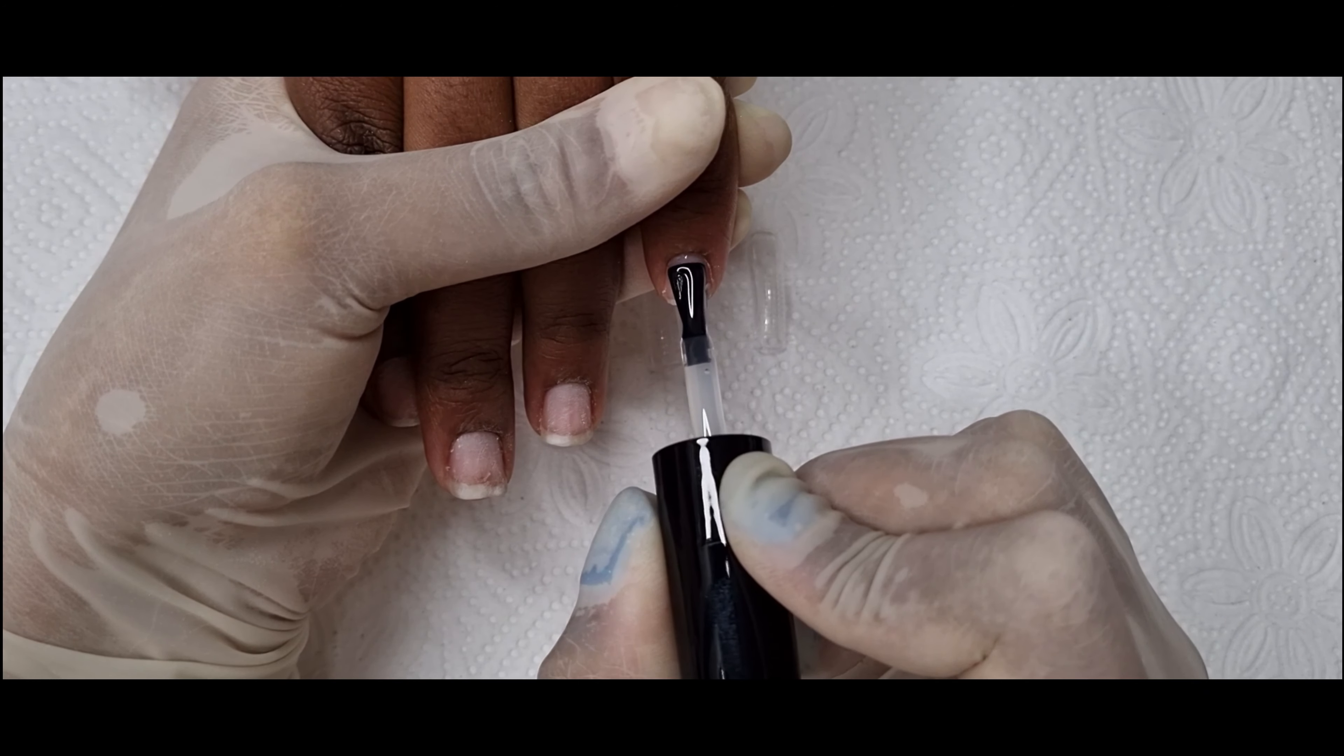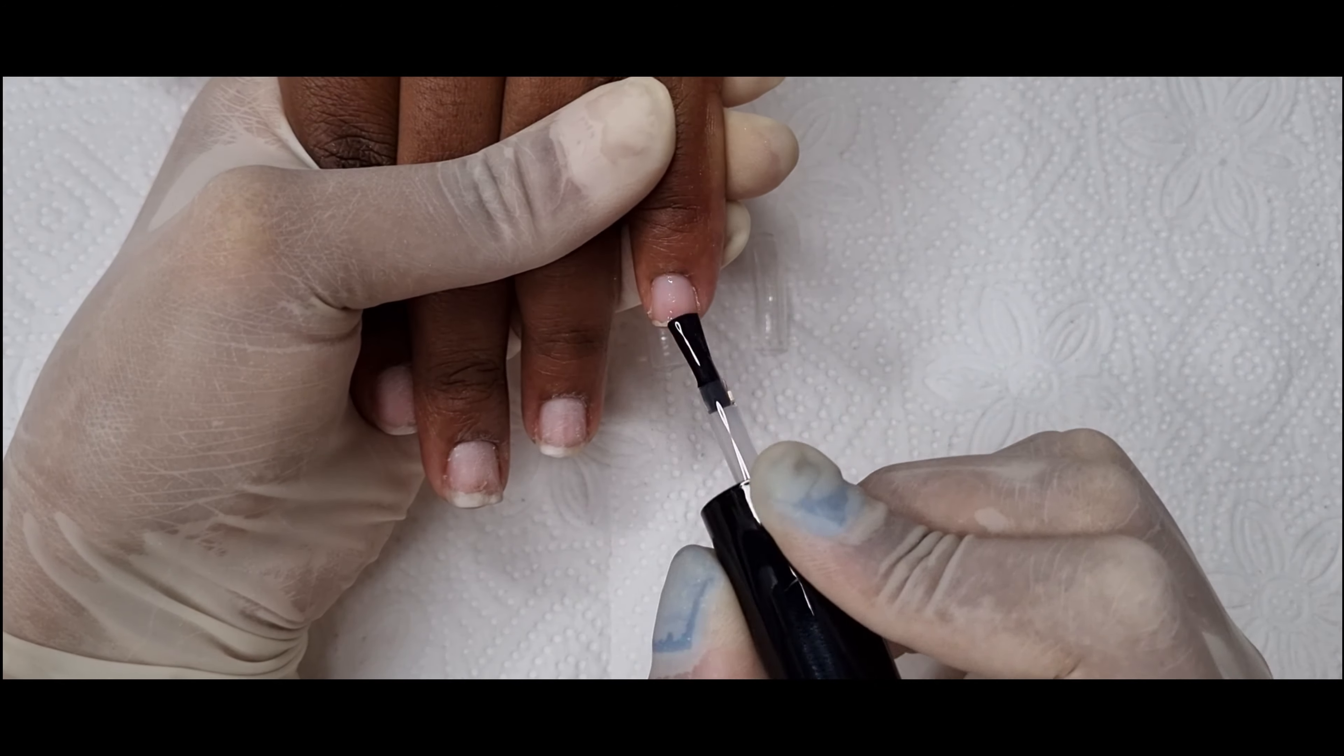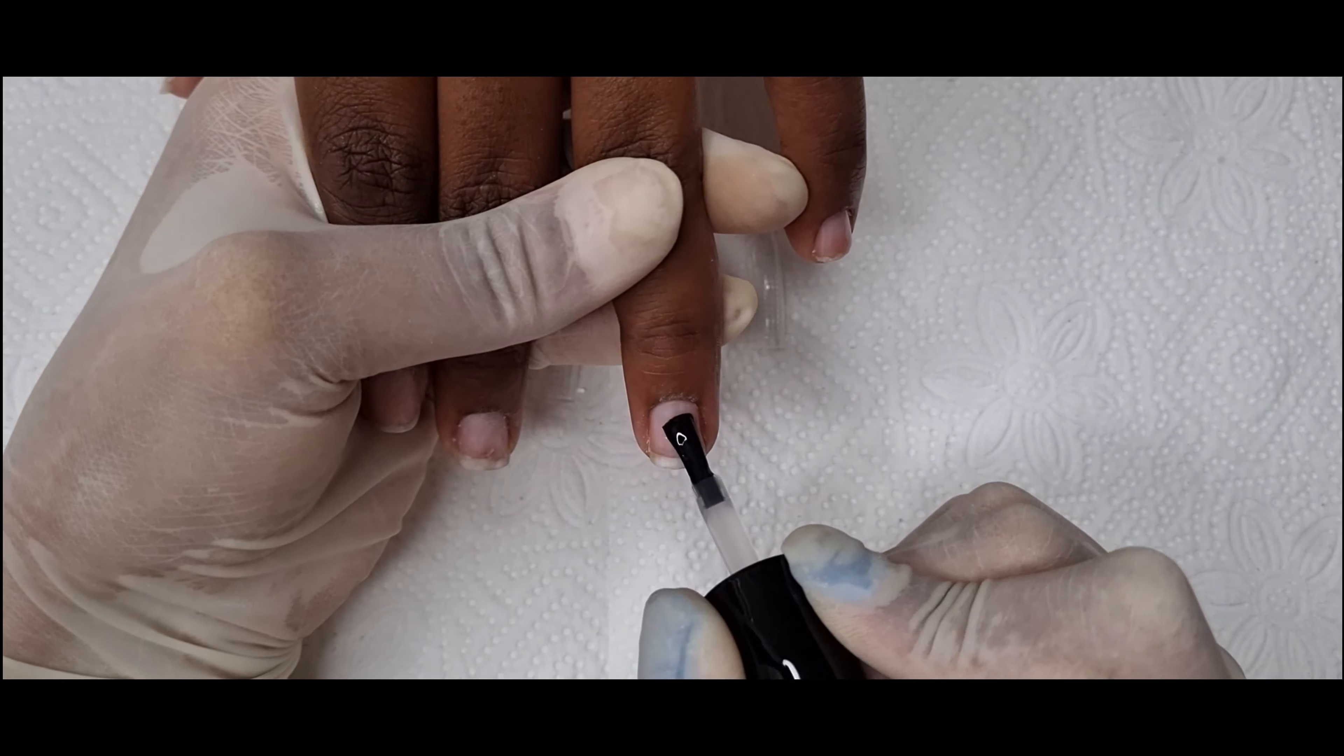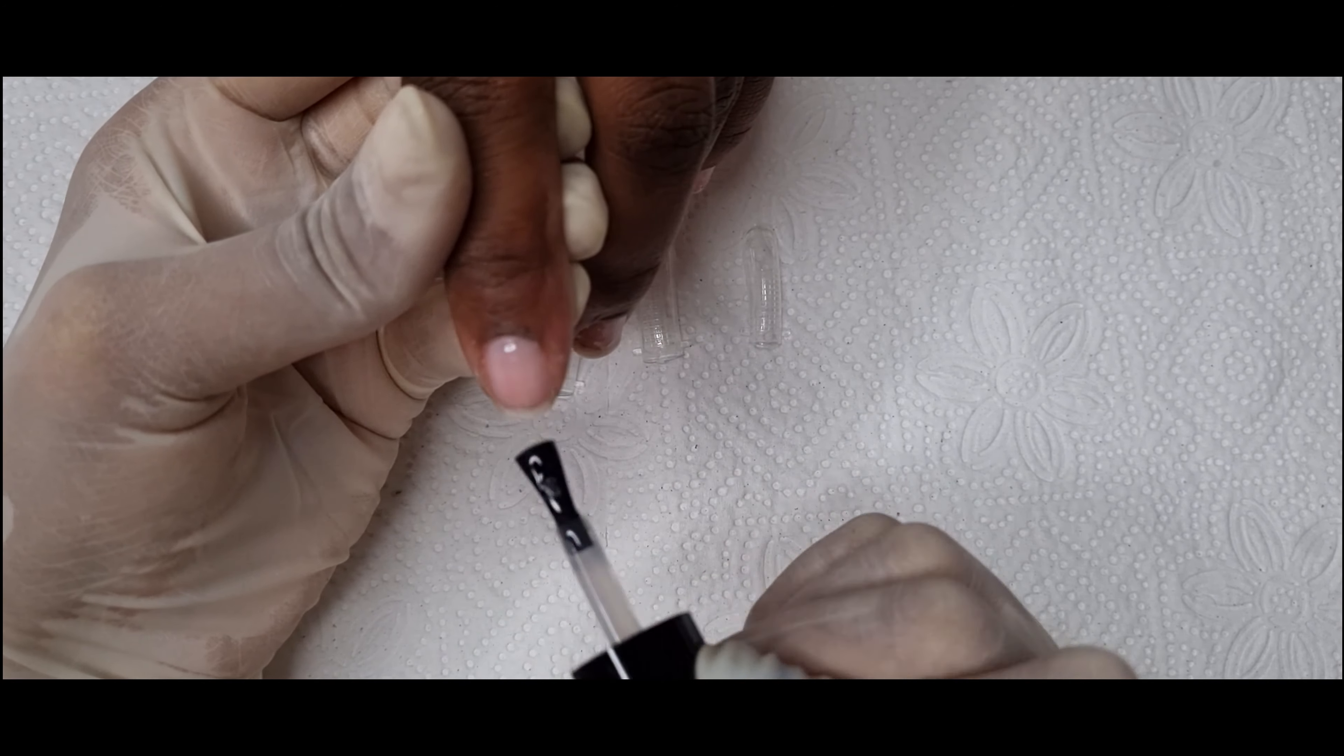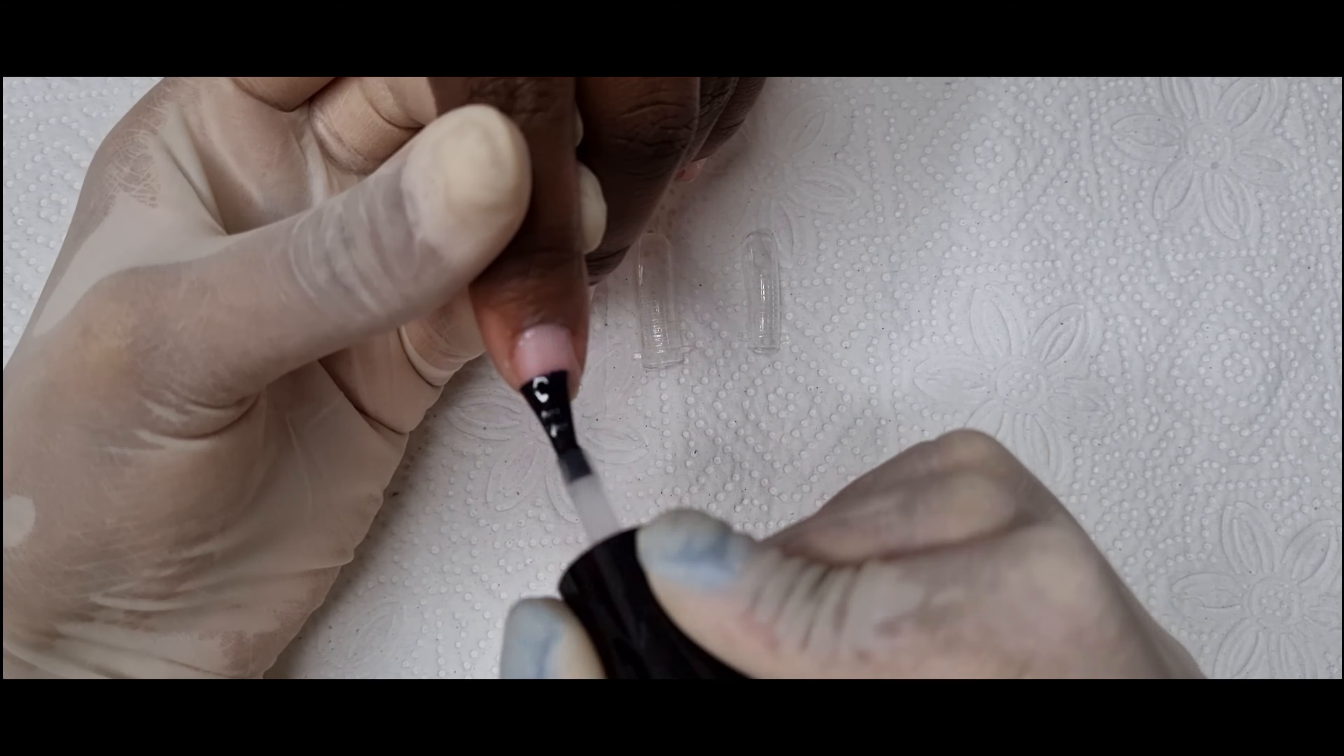I'm going to go in with the rubber base coat. Now this is a very important step because the poly gel needs something to stick on. So you want to start off with the UV base coat before you lay your poly gel on the nails, because if you do it without the base coat the nail will just lift right off. Then I'm going to cure that in the LED lamp.